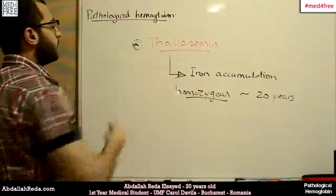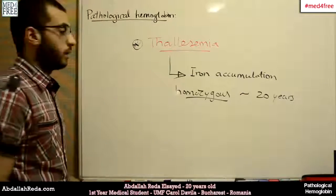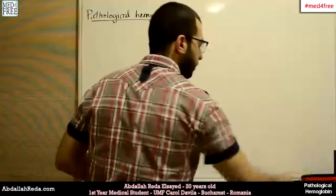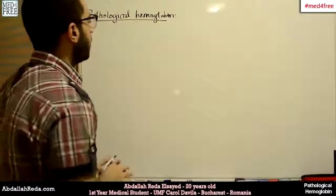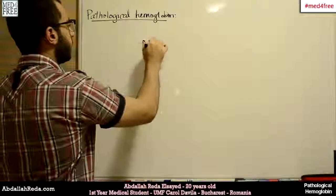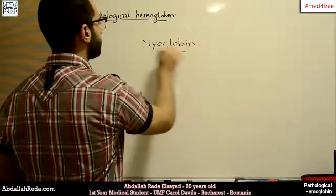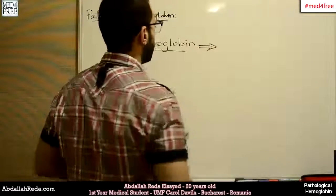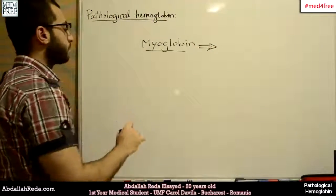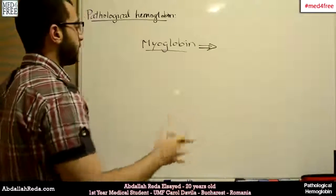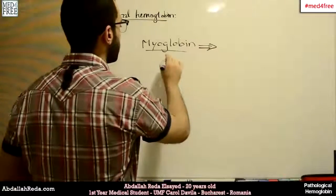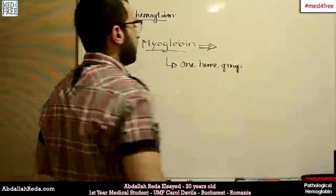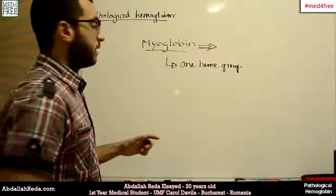Those were the examples of pathological hemoglobin. Now we want to talk about another type of hemoglobin that is not pathological — myoglobin. Myoglobin differs from hemoglobin in several criteria. First, hemoglobin is a tetrameric protein, whereas myoglobin has just one heme group. Myoglobin also has a higher affinity for oxygen.